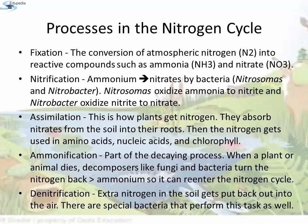The next step is ammonification — this is part of the decaying process. When a plant or animal dies, decomposers like fungi and bacteria turn the nitrogen back into ammonium so it can re-enter the nitrogen cycle. The last step is denitrification — extra nitrogen in the soil gets put back out into the air. Special bacteria perform this task as well.